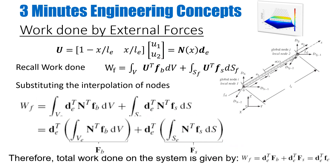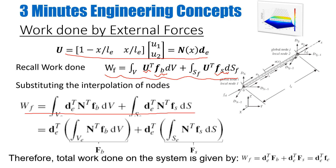Coming back to the work done term in Hamilton's principle: my work done term was given by the force vectors for body forces and surface forces times the displacements. I replace U with the shape function equation, and ultimately end up with a relationship where DE can be taken out. I call the resulting body force vector FB and the surface force vector FS. So my final work done by the forces is: DE transpose times FB plus DE transpose times FS.